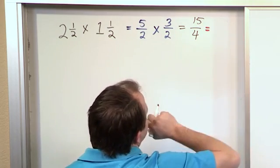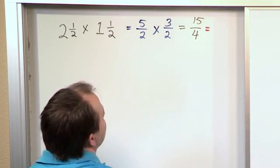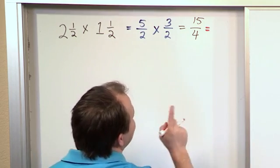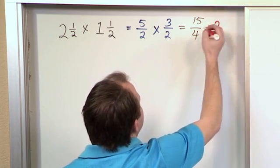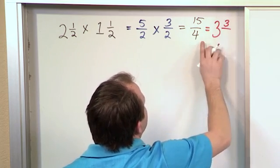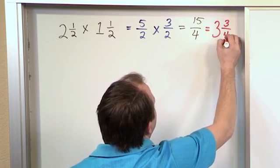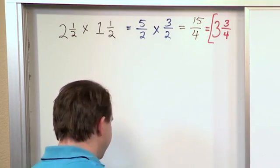How many times will 4 go into 15? 4×3 is 12, and 4×4 is 16. That's too big. So 4×3 is 12. We'll go 3 whole times. The difference between 12 and 15 is 3, so that's the remainder, and we always write it over what's on the bottom. So the answer is 3¾.